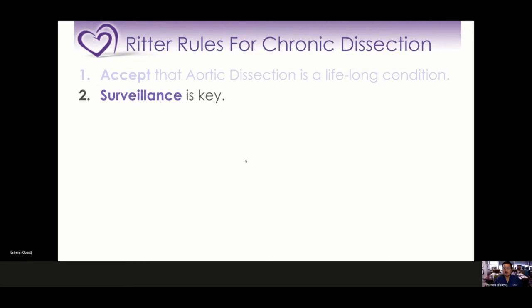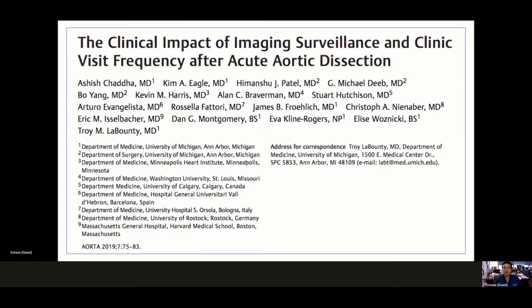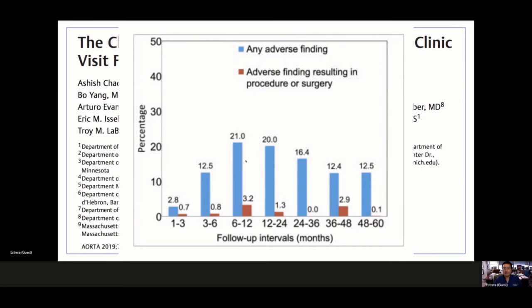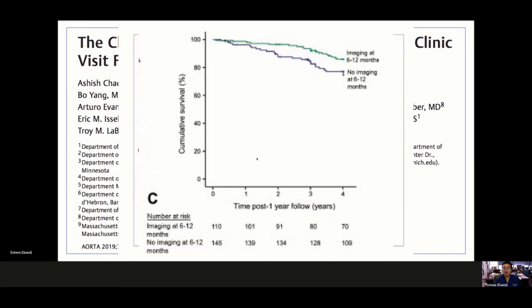Rule two: surveillance is the key for patients in the long chronic state. An important recently published paper highlights that radiographic adverse events and the need for surgery were highest between six to 12 months after initial dissection. But importantly, those risks do not decrease dramatically even beyond five to six years. Patients who did not have imaging had a lower survival rate than those who did — demonstrating that surveillance allows intervention to prevent rupture, re-dissection, and death.